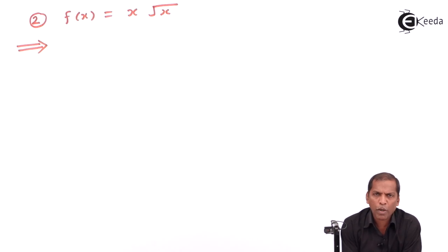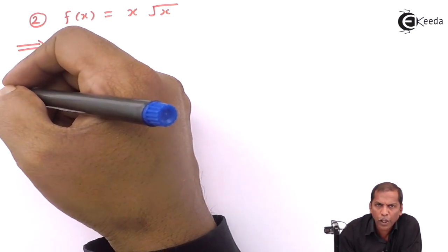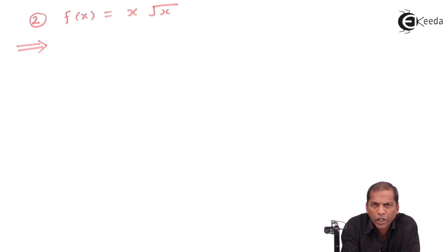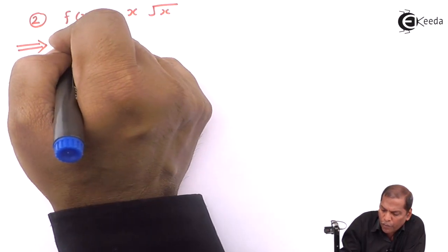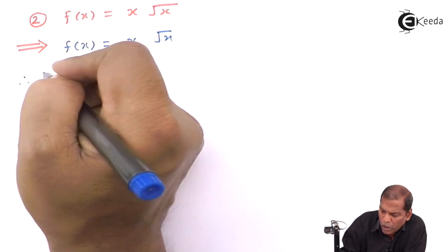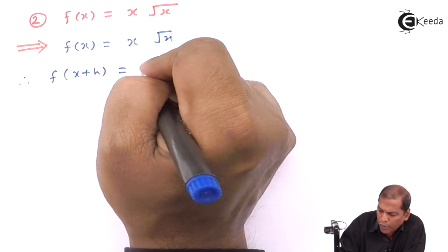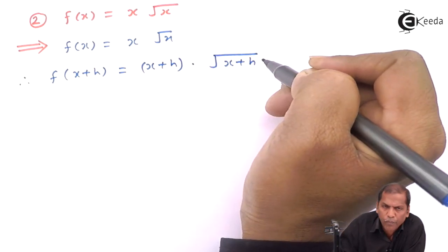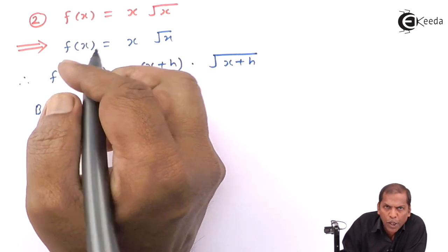Hello friends, now we see problem number two, which is also based on the first principle of derivative. Problem number two: f(x) is equal to x root x, and the question is we have to find the derivative using the first principle. The first step is to write f(x) = x into root x, and f(x+h) = (x+h) into square root of (x+h).